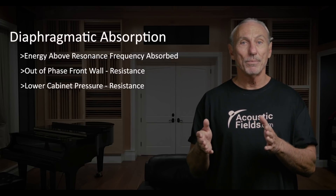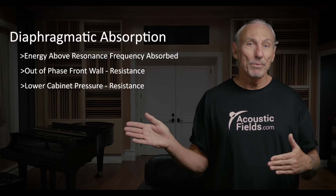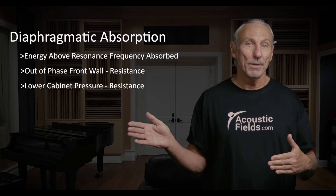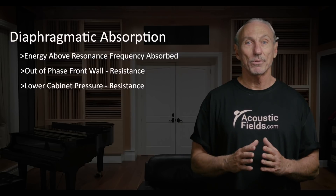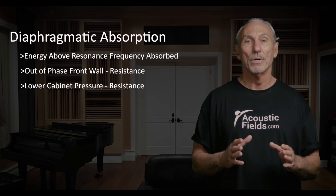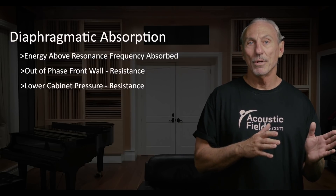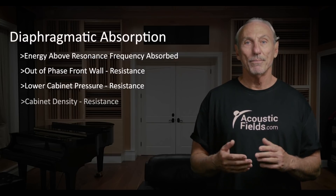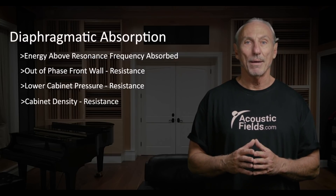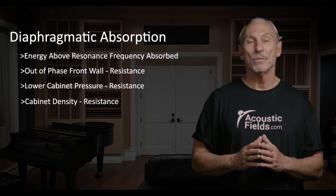Some energy is absorbed, some is reflected back into the room, and some goes through the cabinet completely — because low-frequency energy is difficult to stop. So we offer resistance with the dual front wall, slow the wave down, absorb it inside the cabinet, and that's how we get that 2 dB attenuation for every 10 square feet.